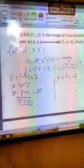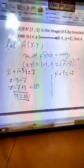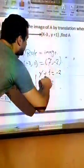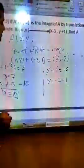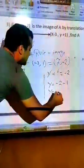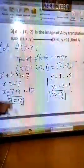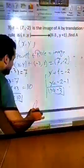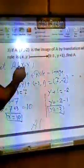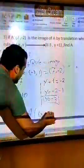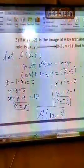Let's find the y-coordinate. We have y plus 1 equals −2. Moving the 1 to the other side — since it is positive it becomes minus — so y equals −2 minus 1, which is −3. So the x-coordinate is 10 and the y-coordinate is −3. Therefore, point A is (10, −3).